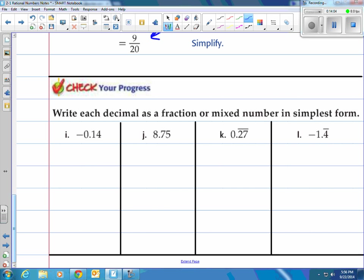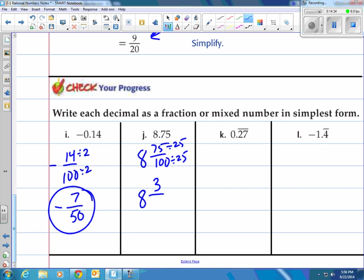First one, negative fourteen hundredths. Well, I see that 2 goes into both of these. So I'm going to divide by 2, and I'm going to have negative 7 fiftieths. Just don't forget the negative. 8.75. That's 8 and 75 hundredths. So I would write that as 8, and I can see 25 goes into 75, so I'm going to reduce the fractions, and that's going to be three-fourths. Some of you may have even memorized that. 0.75 is three-fourths.